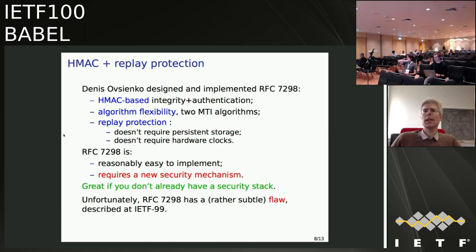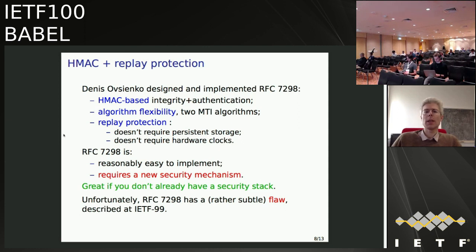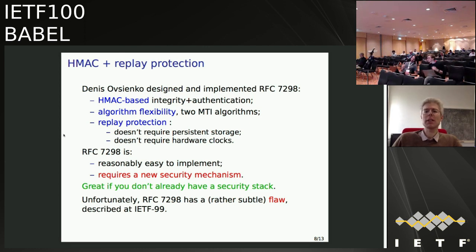The protocol suggested quite a lot is due to Denis Avsienko, who has designed, implemented, and written it down as RFC 7298. It uses HMAC-based integrity and authentication, has algorithm flexibility with two mandatory-to-implement algorithms, and has a fairly refined scheme for replay protection that doesn't require persistent storage or hardware clocks — important because we want to run Babel on embedded hardware. RFC 7298 is reasonably easy to implement, but it's a new security mechanism and some people are nervous about a new protocol stack. As was explained in Prague, RFC 7298 has a subtle flaw that needs to be fixed.